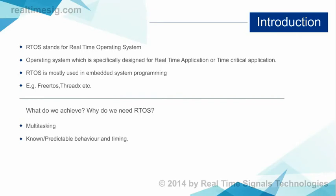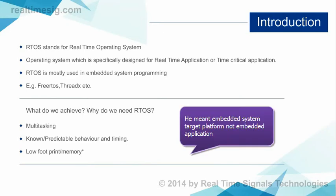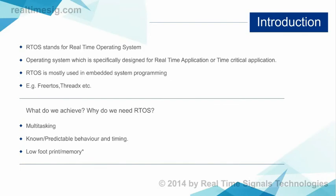Let's see what we need in RTOS. We need multitasking, we need predictable behavior because deadlines are taken very seriously, and we also need a small footprint. Basically, RTOS is deployed on embedded applications which have very little memory, and most likely RTOS will sit in internal memory, so the size of your memory is going to be about a few KBs.